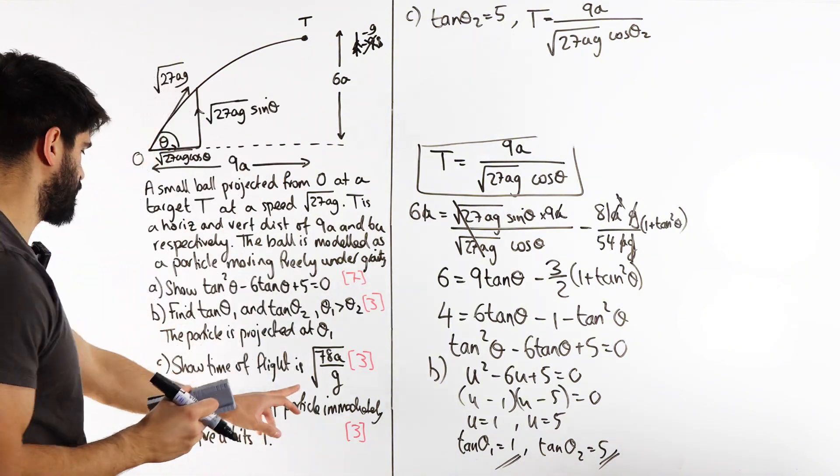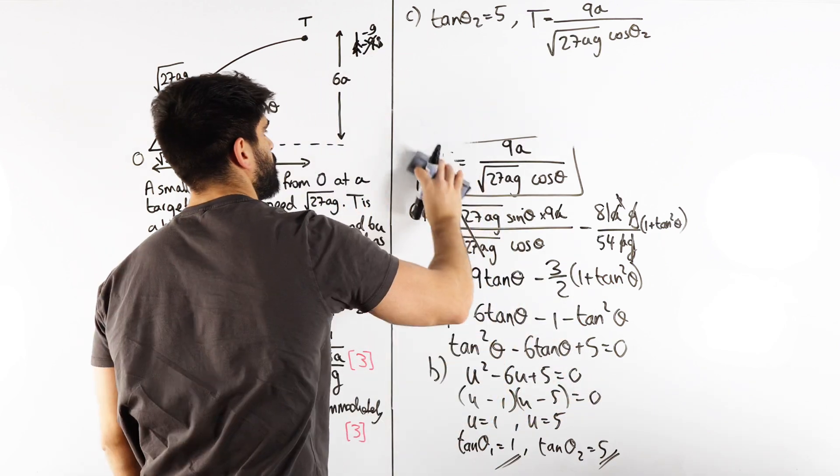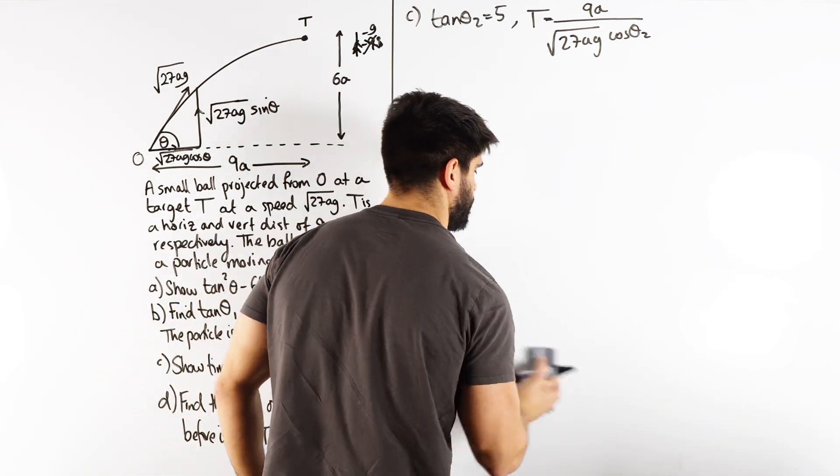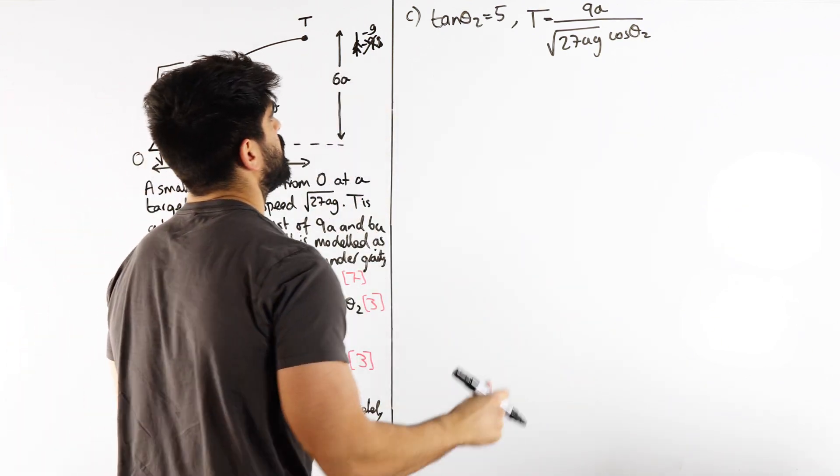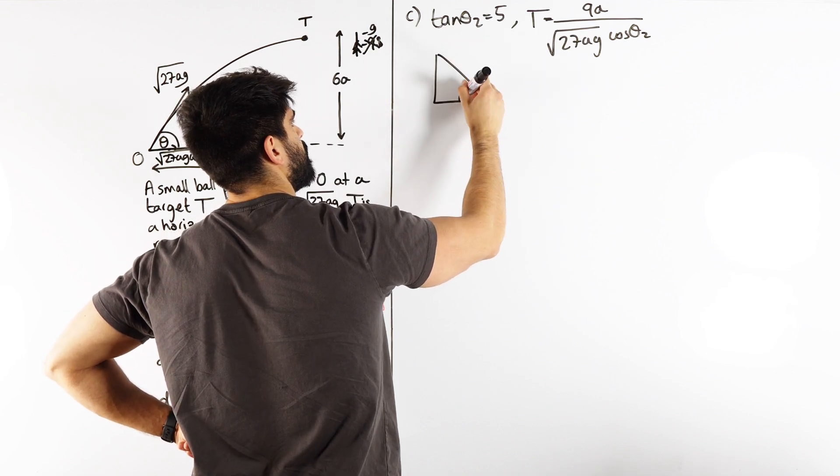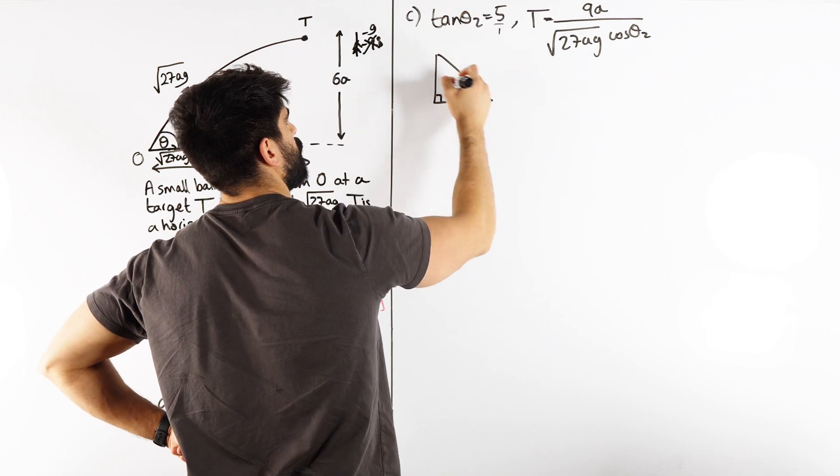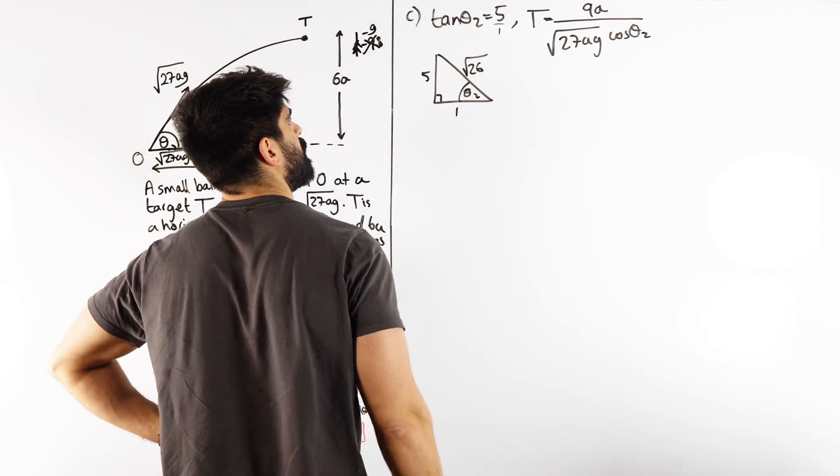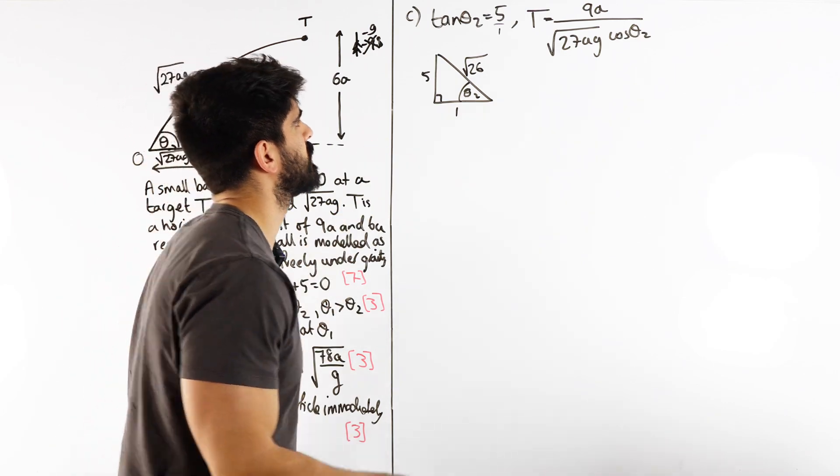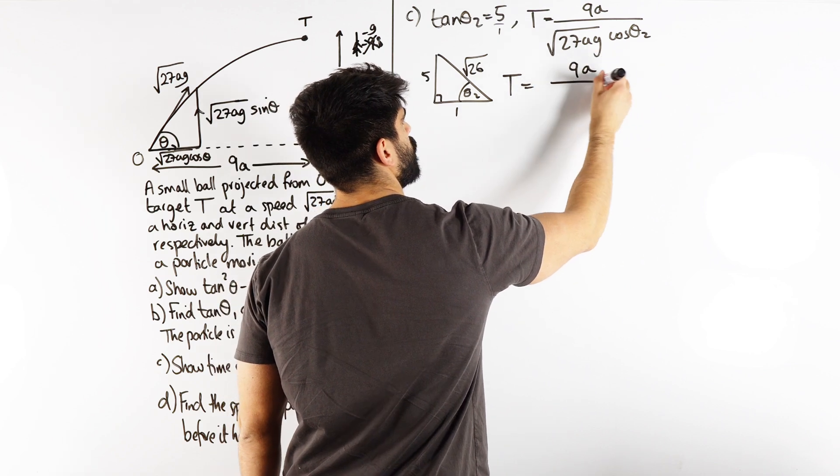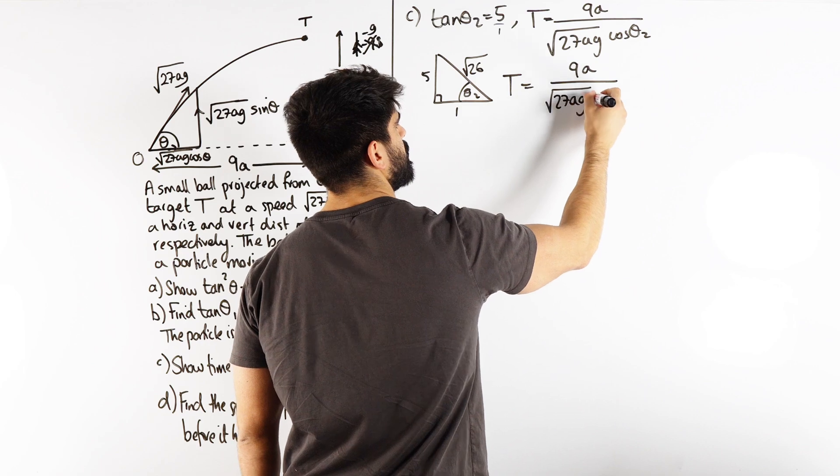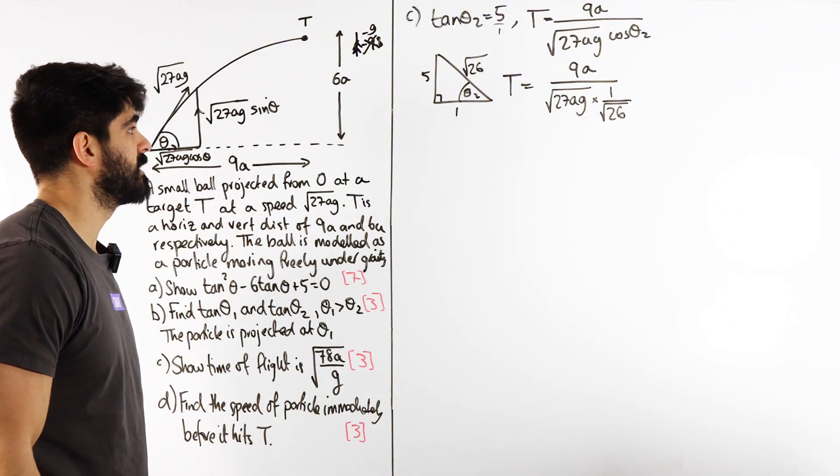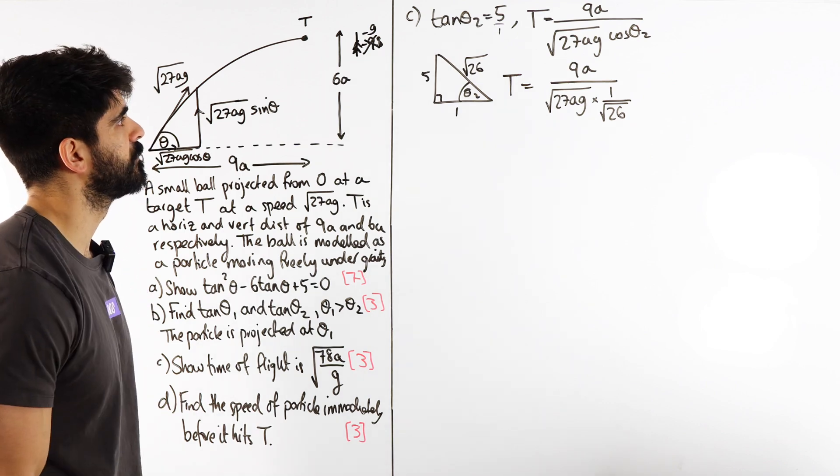How do we work out what cos theta2 is? I think the best way is to use the triangles here. I really hope I don't need any more information from what I've just rubbed out. If we use the triangle, we have theta2. Tan is opposite over adjacent, so it's 5 over 1. The hypotenuse is root of 5² + 1², which is root 26. So cos will be 1 over root 26. So we have t = 9a over root 27ag times 1 over root 26.